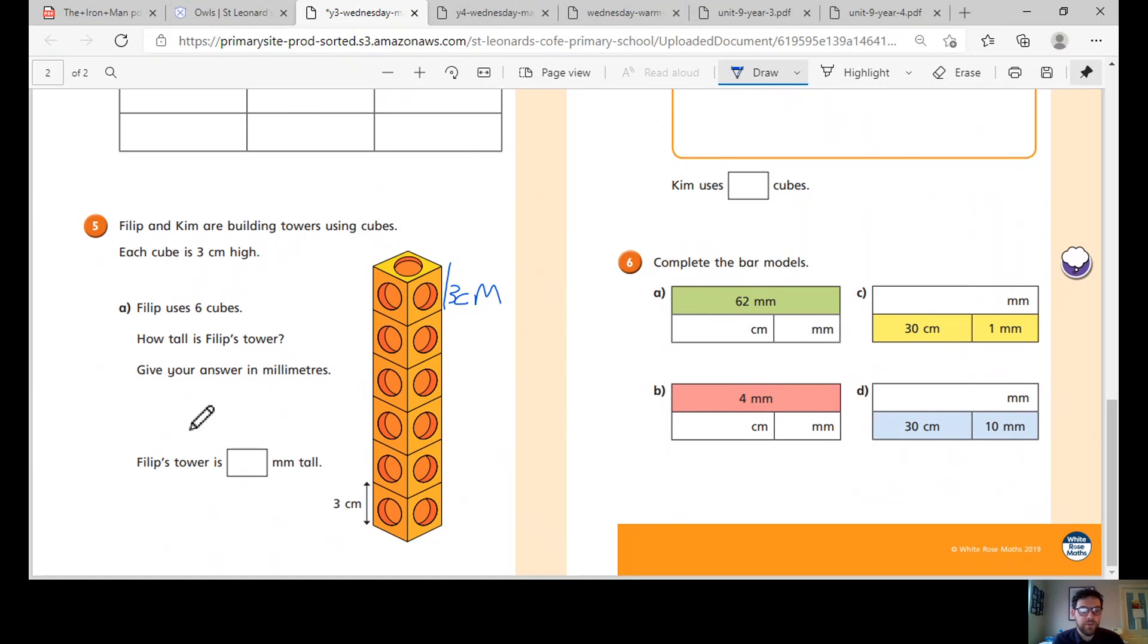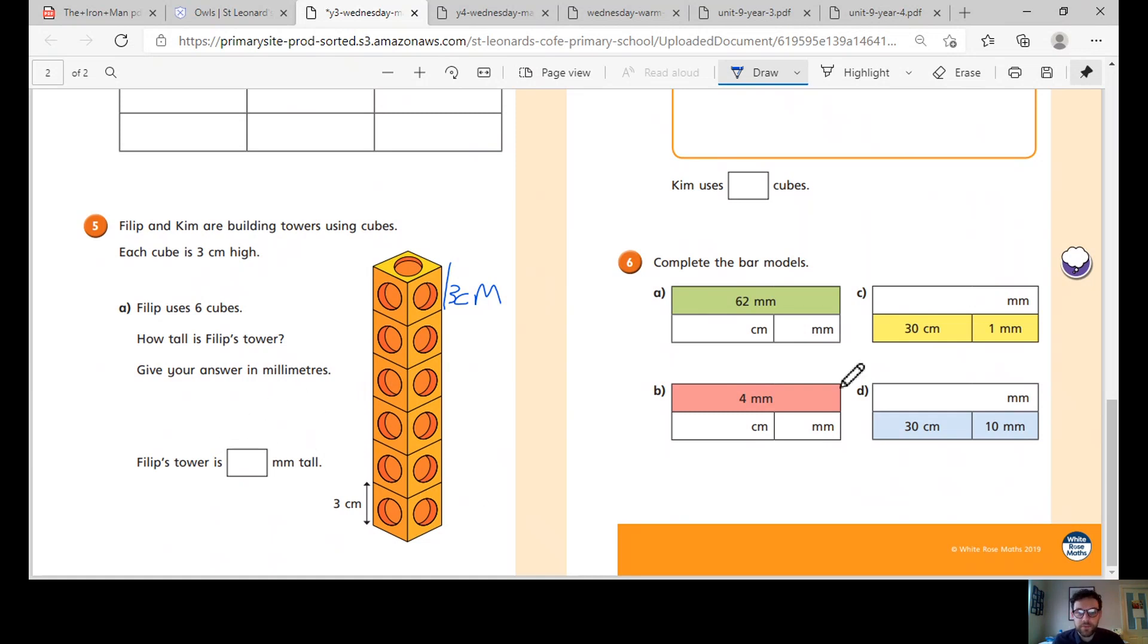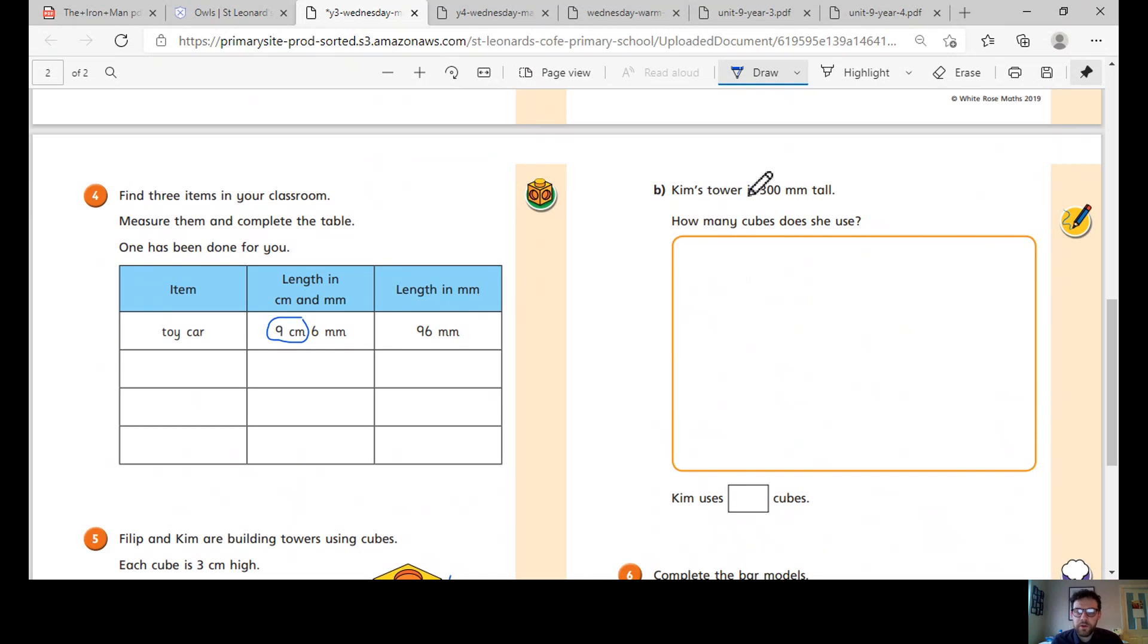Then you need to convert how many centimetres into millimetres. Kim's tower is 300 millimetres tall. How many cubes does he have? So we've got to work out